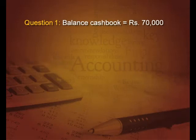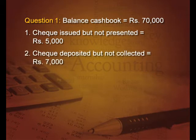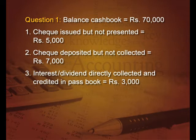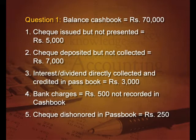Let us do one practical question. Balance as per cash book is given as 70,000. First entry: check issued but not presented, 5,000. Second: check deposited but not collected, 7,000. Third: interest or dividend directly collected and credited in the pass book, 3,000. Next: bank charges of 500 not recorded in the cash book. Last: check dishonored in pass book, 250 rupees.